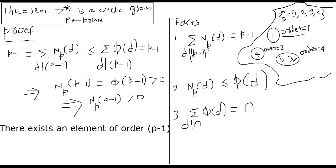I am just counting how many elements I have in each bucket: here I have 1, here I have 1, and here I have 2. Totally, I have 4 elements, which is nothing but the group order. The group order is also 4.